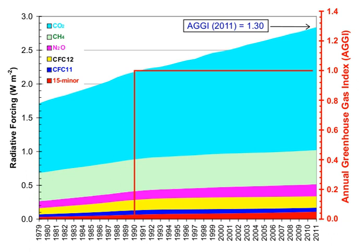Earth absorbs some of the radiant energy received from the Sun, reflects some of it as light, and reflects or radiates the rest back to space as heat. Earth's surface temperature depends on this balance between incoming and outgoing energy. If this energy balance is shifted, Earth's surface becomes warmer or cooler, leading to a variety of changes in global climate. A number of natural and man-made mechanisms can affect the global energy balance and force changes in Earth's climate.